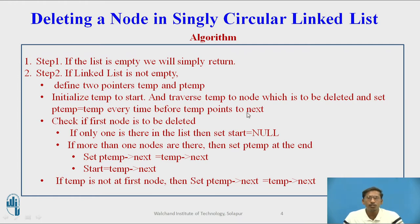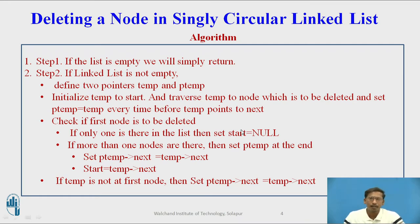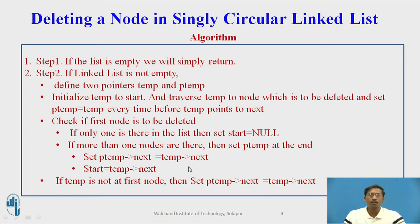After temp is pointing to the node which is to be deleted, check whether that node is the first node or not. If it is the first node, check if the singly circular linked list contains only one node — in that case set start equal to null. If it contains more than one node and you want to delete the first node, point ptemp to the end of the singly circular linked list, then set ptemp->next equal to temp->next and start equal to temp->next.